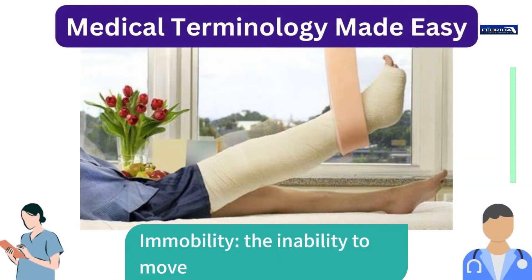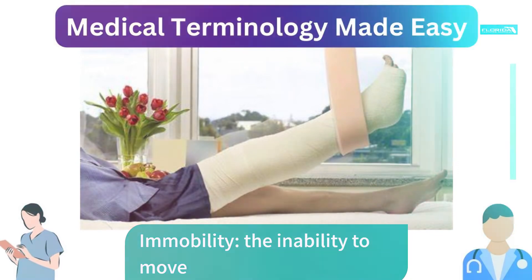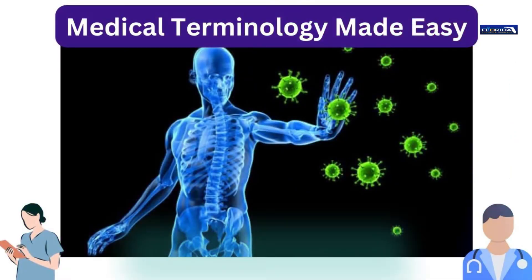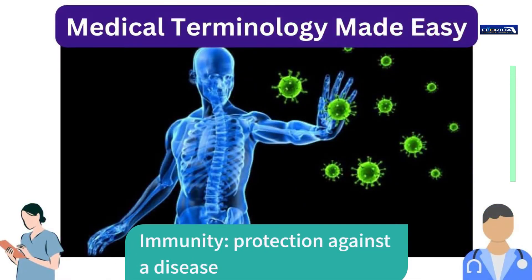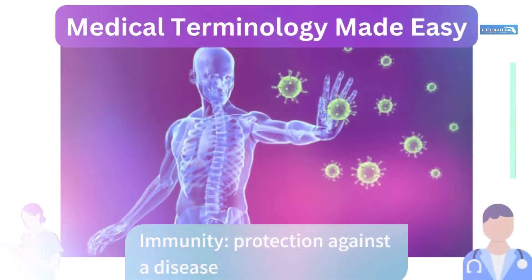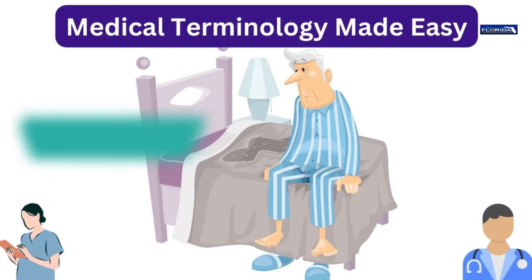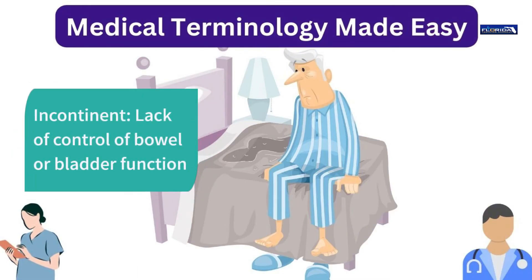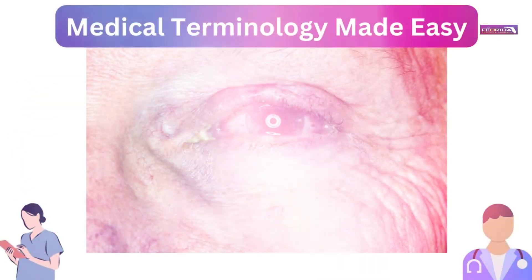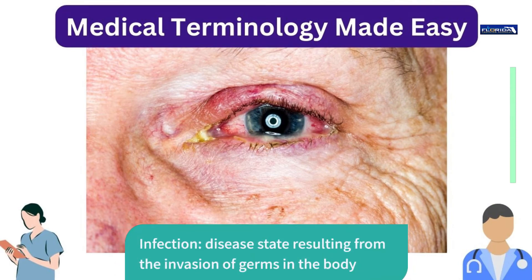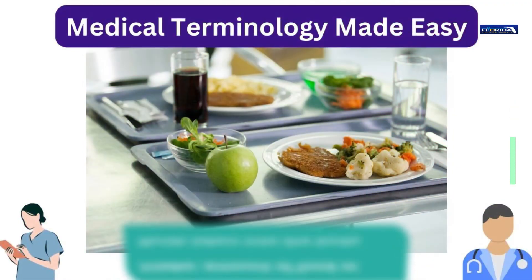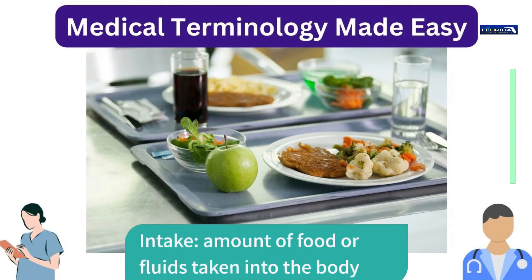Immobility: the inability to move. Immunity: protection against a disease. Incontinent: lack of control of bowel or bladder function. Infection: disease state resulting from the invasion of germs in the body. Intake: amount of food or fluids taken into the body.